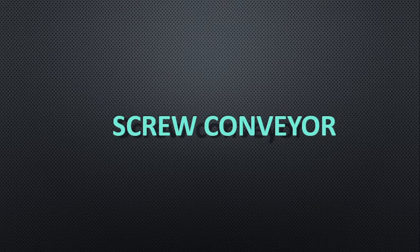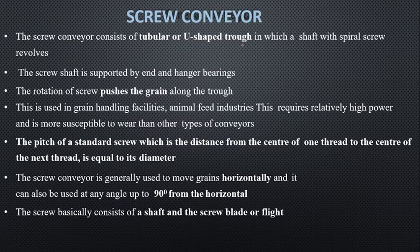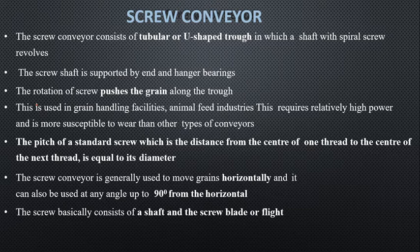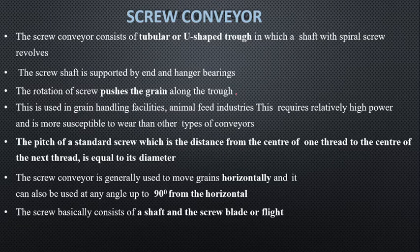Earlier we learned about the bucket elevator. Now we are going to start with the screw conveyor. A screw conveyor generally consists of a tubular or U-shaped trough in which a shaft with a spiral screw revolves. It is designed with a spiral screw revolving, generally supported by end hanger bearings. The rotational screw pushes the grain along the trough.